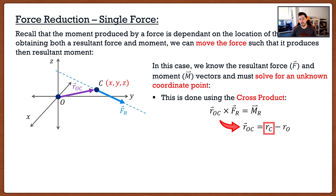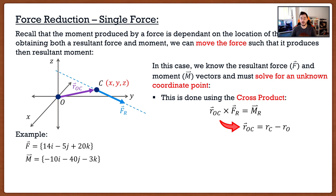How exactly do we rearrange the cross product to figure this out? Actually, we don't rearrange it. The cross product isn't as simple as dividing or rearranging — we need more complex mathematics. What I do is simply carry out the cross product with unknown variables. I just carry out the cross product as usual, but substitute unknown variables in place of the known position vector components. Let me show you through an example.